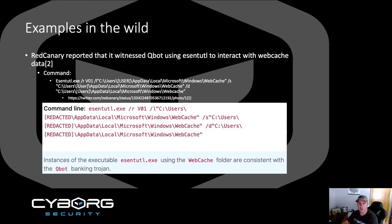The second example comes to us from Red Canary's Twitter account, where they documented AscentUtil interacting with the webcache directory. There's a file in this directory named webcachev01.dat, which contains information from Internet Explorer and Microsoft Edge and could contain credentials.